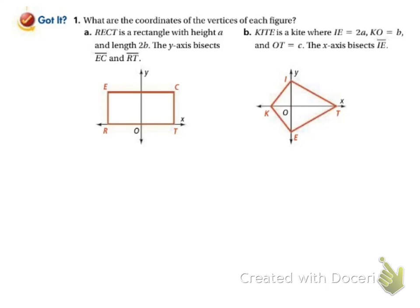Let's try this rectangle. We're told the rectangle has a height of a and the length is 2b. The y-axis bisects sides EC and RT, splitting 2b into two parts of b each. Starting from the origin and moving right to this vertex — moving right changes x, so y is still 0. Going right b makes x equal b. Then moving up to vertex C changes y: x stays b, and we went up a, so y is a, giving (b, a).